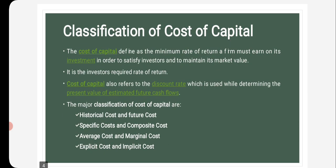Next, classifications of cost of capital. The cost of capital is defined as the minimum rate of return a firm must earn on its investment in order to satisfy the investors and to maintain its market value. It is the investors' required rate of return. The major classifications of cost of capital are: historical cost and future cost, specific cost and composite cost, average cost and marginal cost, and explicit cost and implicit cost.